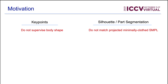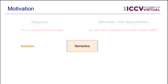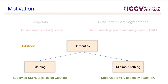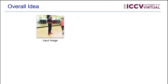To address this problem, we introduce semantic information in the form of clothing and minimal clothing. Clothing semantics can be used to supervise SMPL to lie inside the clothing region, and minimal clothing can be used to supervise SMPL to exactly match the minimal clothing region.